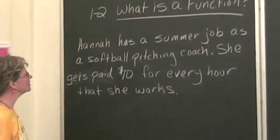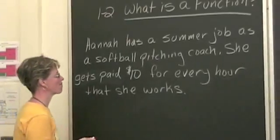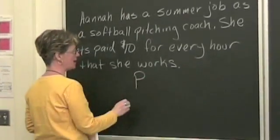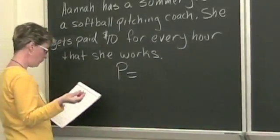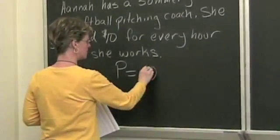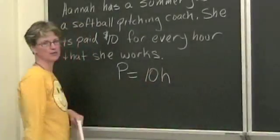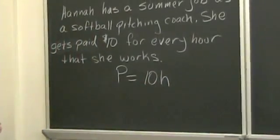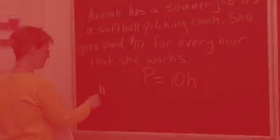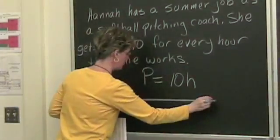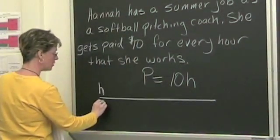Alright, let's see if we can code this up a little bit. She gets paid. We're going to let P stand for the amount she's paid. And we're just looking at $10 times the number of hours. So it's a pretty straightforward little equation. Pay is equal to 10 times h. The number of hours that she works, and that's going to generate a certain amount of pay.